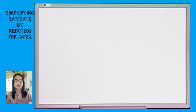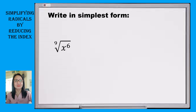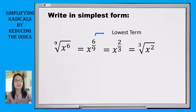Now let us put the following examples in simplest form. Our given is the 9th root of x raised to 6. Expressing this into exponential form, we have x raised to 6 over 9. Then writing 6 over 9 into the lowest term, the common divisor of 6 and 9 is 3. So 6 divided by 3 is 2, and 9 divided by 3 is 3. Therefore, we have x raised to 2 thirds. To transform this into radical form, we will have the cube root of x squared. So this is the simplest form.